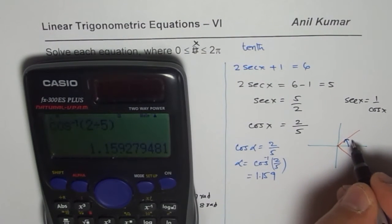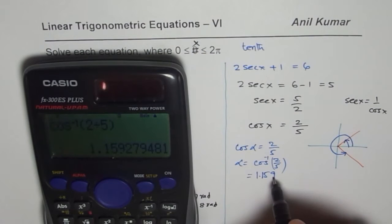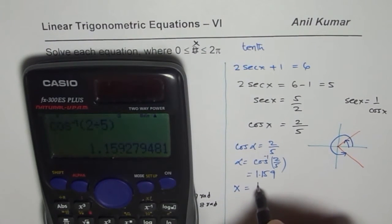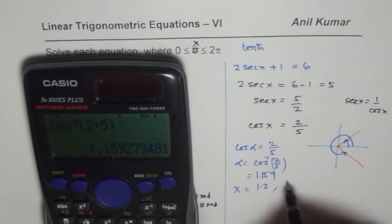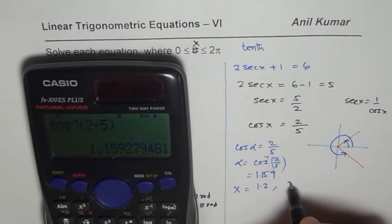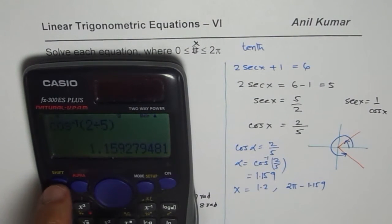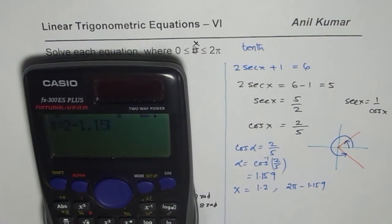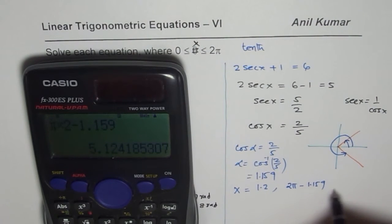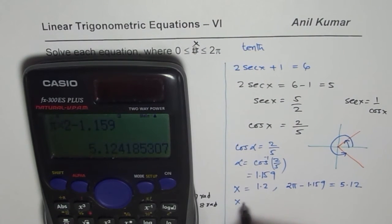Now the answers are: one is the acute angle itself and the other one is 2π minus the angle. So we say x = 1.2 rounded to one decimal place. The other answer will be 2π - 1.159. So we do π × 2 - 1.159, which equals 5.12. Rounding to one decimal place we get 1.2 and 5.1 radians as our answer.